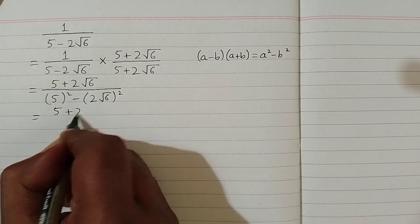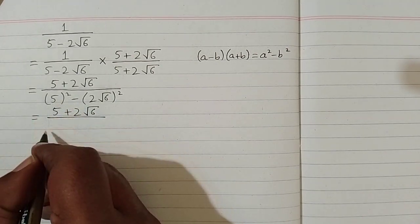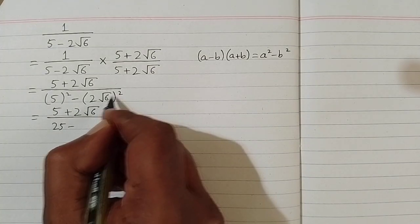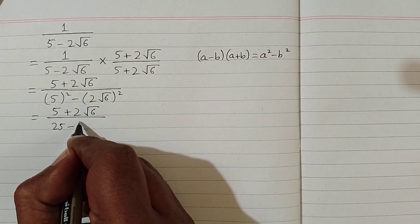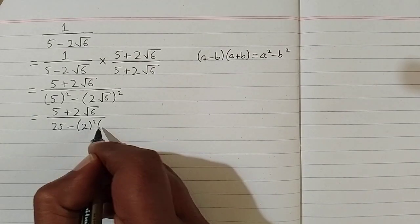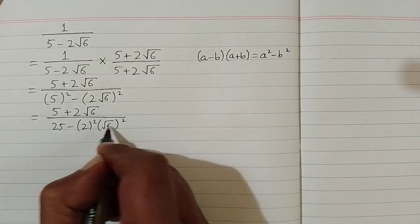Now 5 plus 2 times square root of 6 upon square of 5 is 25. And here we have 2 numbers. So we will apply square on both the numbers. So we have square of 2 multiplied by square root of 6.